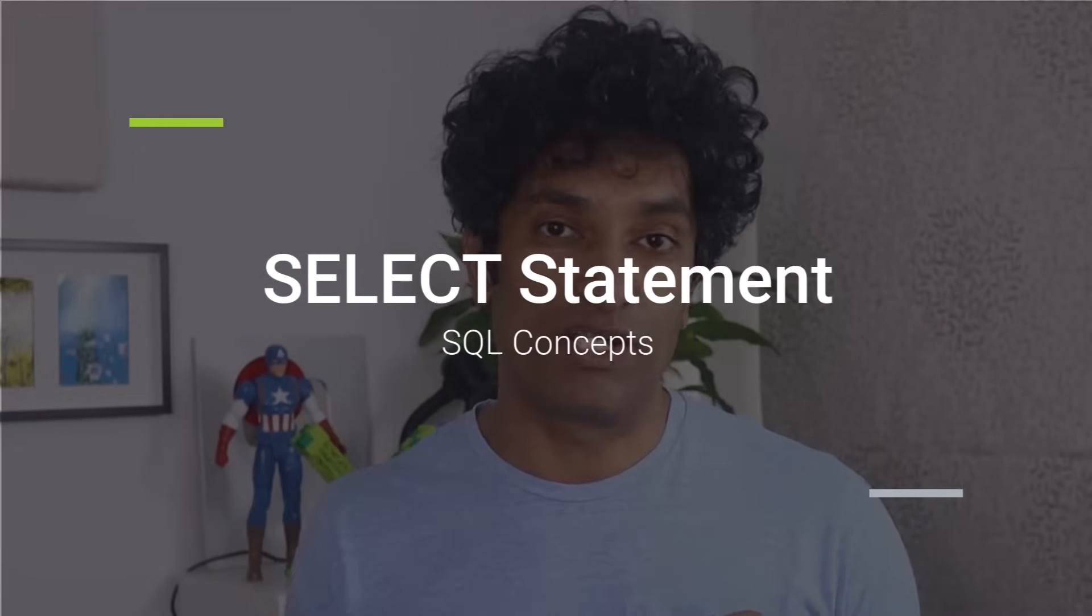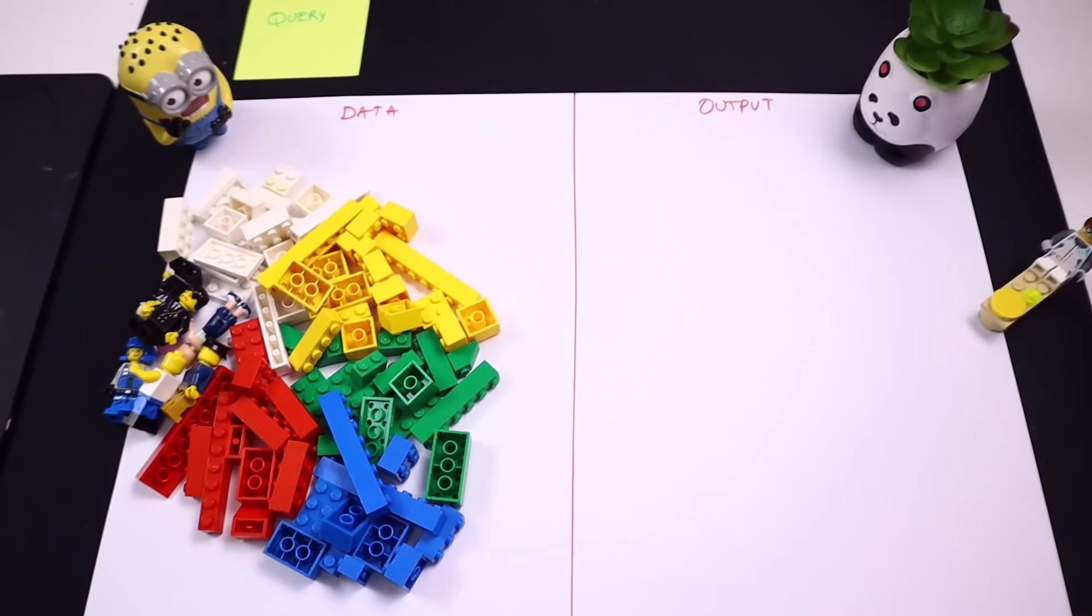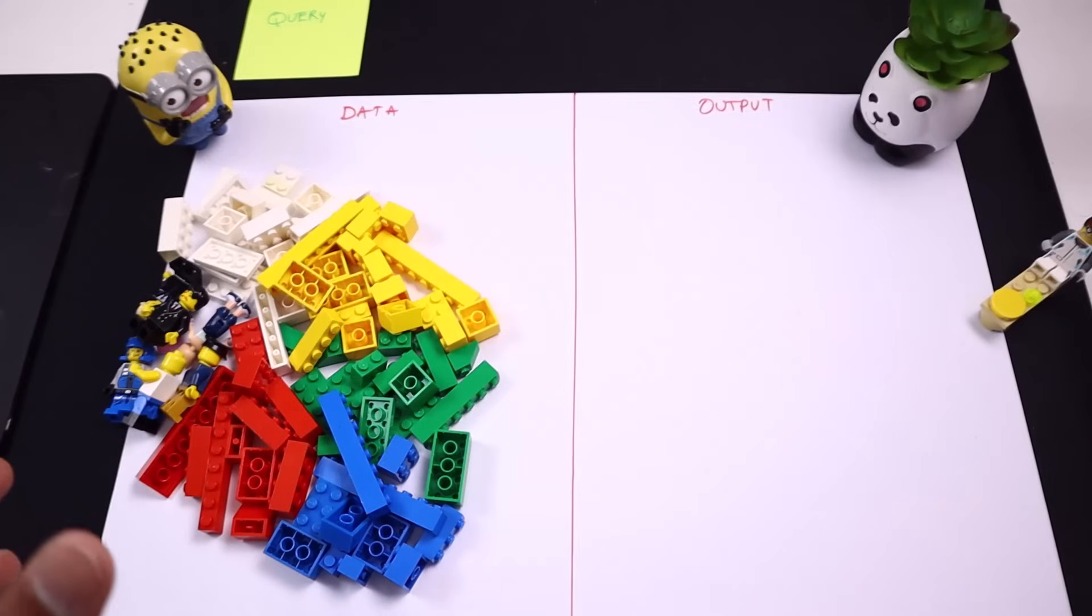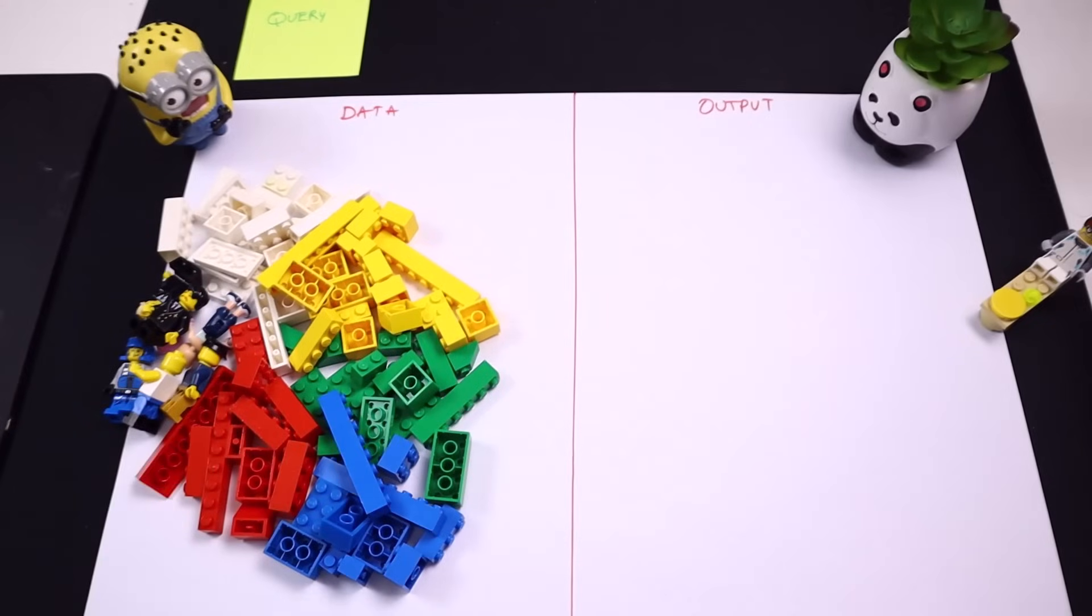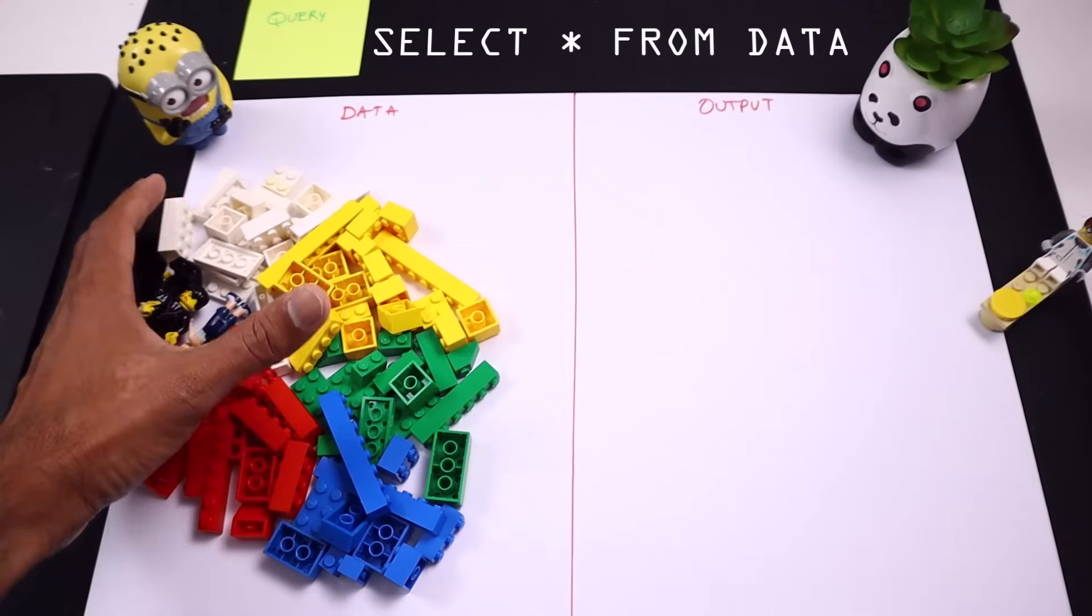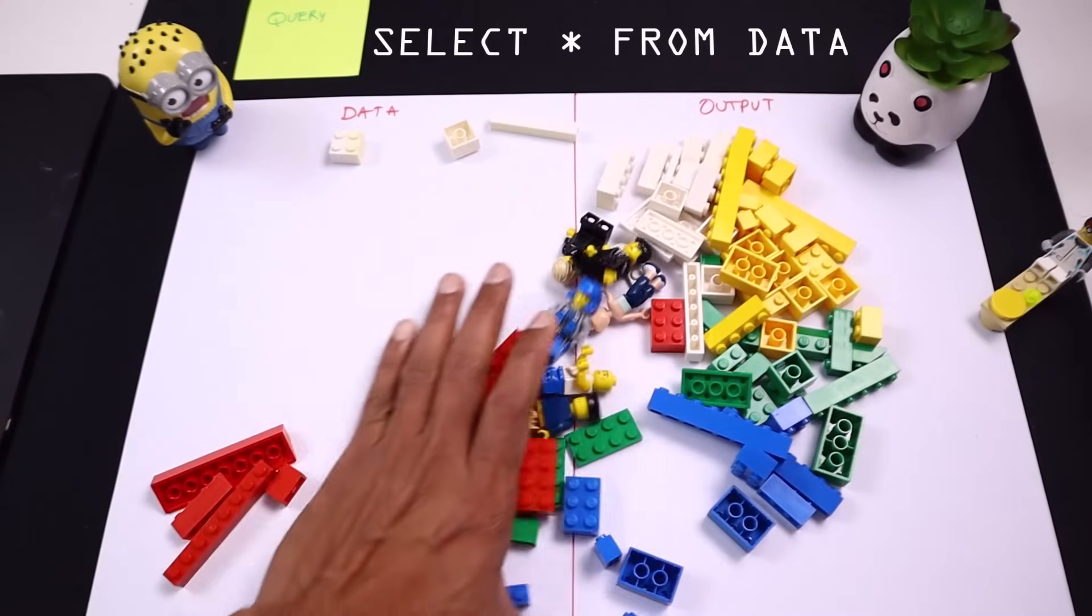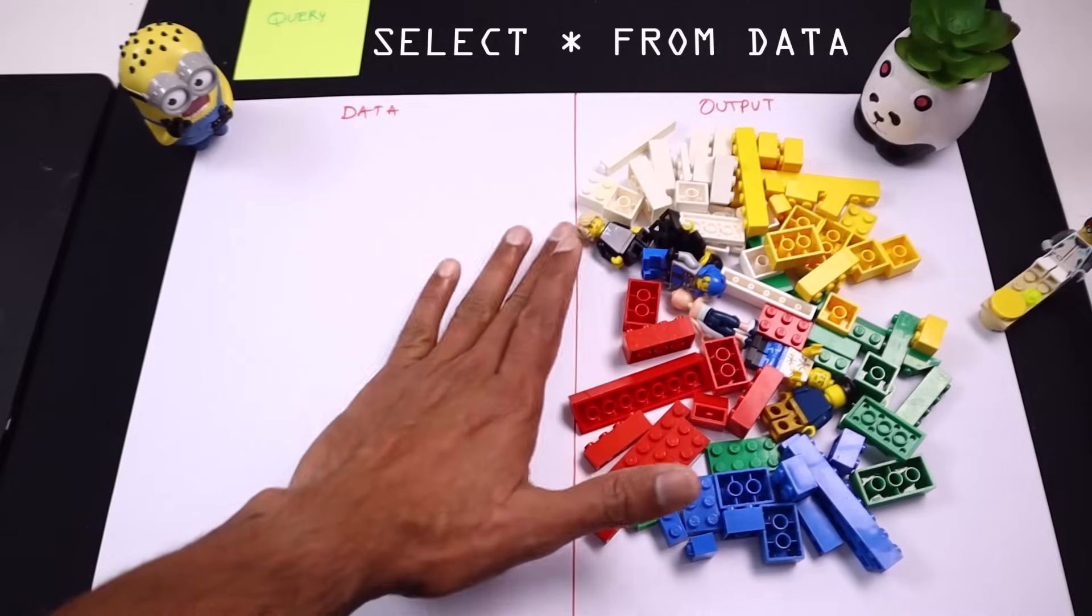In these examples, I'm going to talk about how to use SQL primarily to do the select operations, that is reading the data. So here is my data and we're going to write some SQL queries in real life and see the output here. The simplest query is we want to select everything in the data and put it on the output.